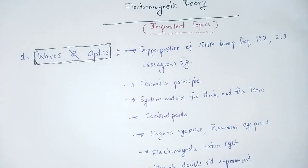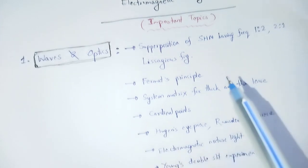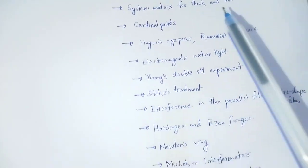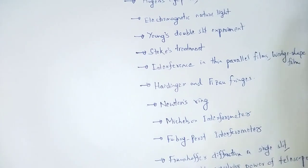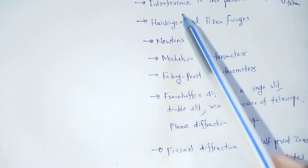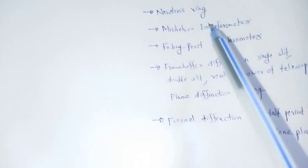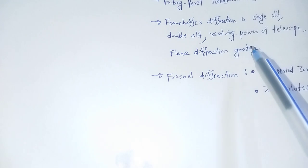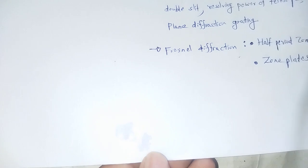Waves and Optics, one core paper. Important topics overview: superposition of SHM having frequency 1 and 2, Lissajous figures, Fermat's principle, system matrix for thick and thin lens, cardinal points, Huygens's principle, Rayleigh's principle, electromagnetic nature of light, Young's double slit experiment, Stokes treatment, interference in thin parallel films, wedge-shaped film, Haidinger and Fizeau fringes, Newton's ring, Michelson interferometer, Fabry-Perot interferometer, Fraunhofer diffraction in single slit, double slit, resolving power of telescope, plane diffraction grating, Fresnel diffraction, half period zone, and zone plates.